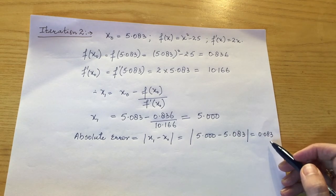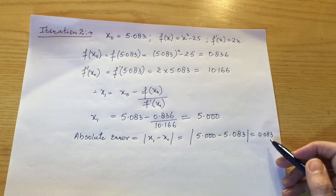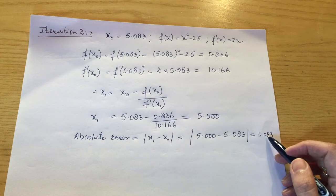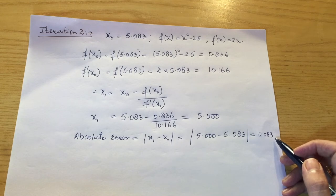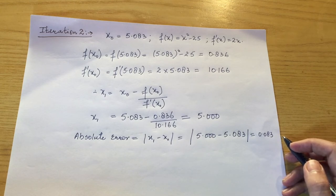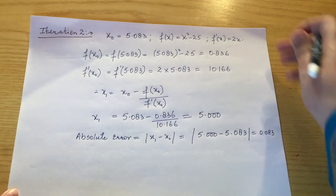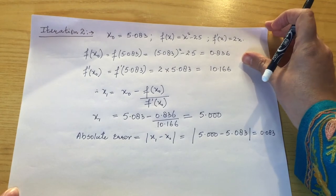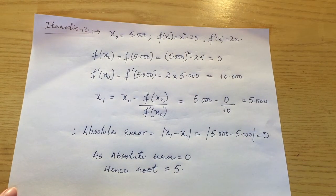We are reducing the error — from 0.917 in iteration 1 down to 0.083 in iteration 2. We are getting closer to zero, so let's move to iteration 3.